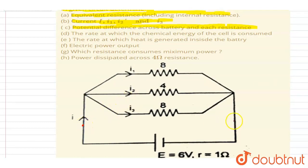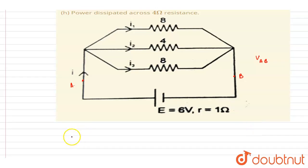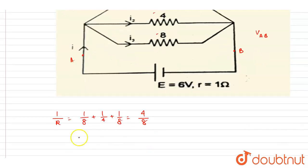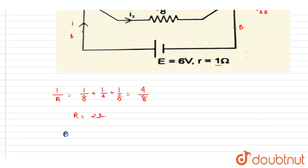The potential difference across the battery and across the three resistors will be the same — that will be VAB, where I mark the terminals as A and B. These three resistors are connected in parallel. So the equivalent resistance is 1/8 + 1/4 + 1/8, which equals 1/8 + 2/8 + 1/8 = 4/8, giving us 2 ohms. Adding the internal resistance of 1 ohm, the total equivalent resistance is 3 ohms.